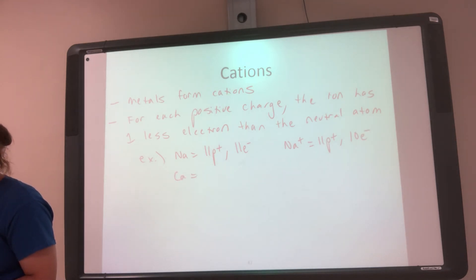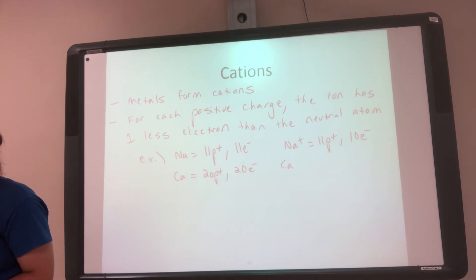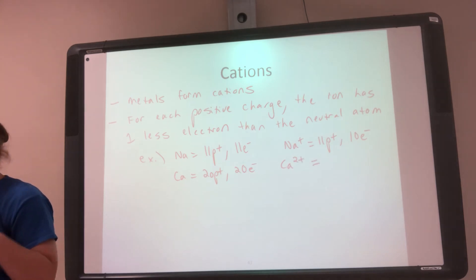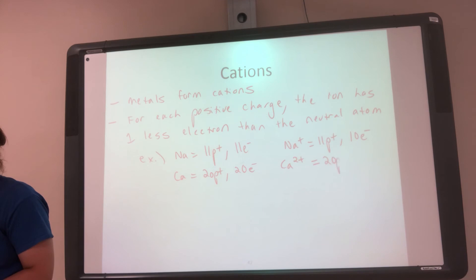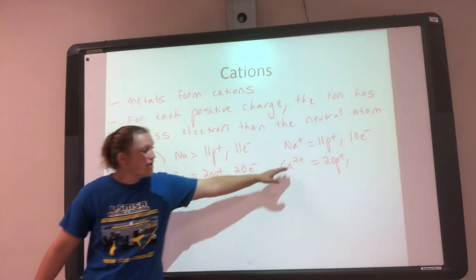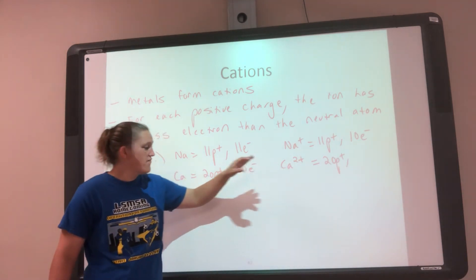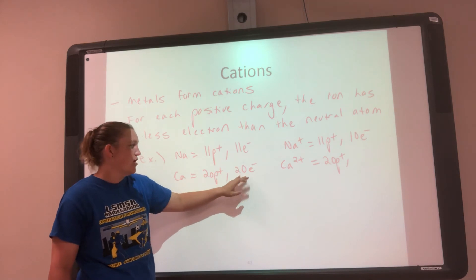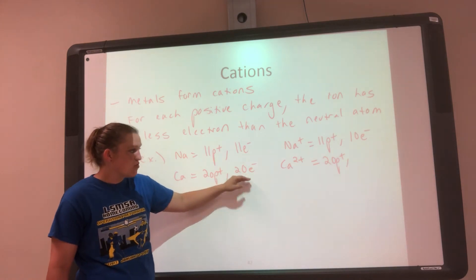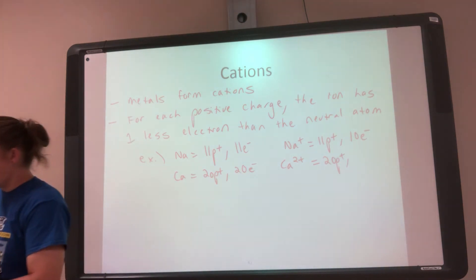Calcium has 20 protons, and since it's neutral it also has 20 electrons. Calcium likes to be a 2+ cation — we'll talk about how we know that in later chapters. So it has 20 protons because it's still calcium, but since it's 2+ it has to have two fewer electrons than neutral: if neutral is 20, it will have 18 electrons.